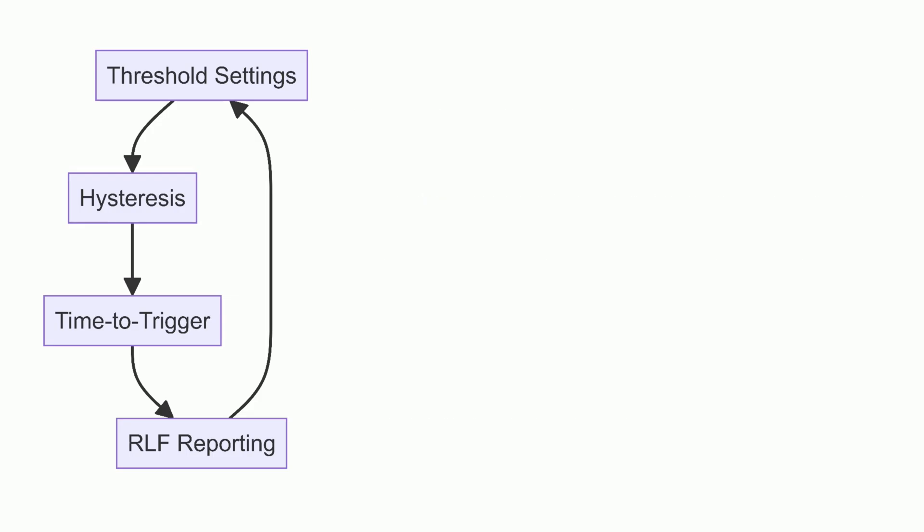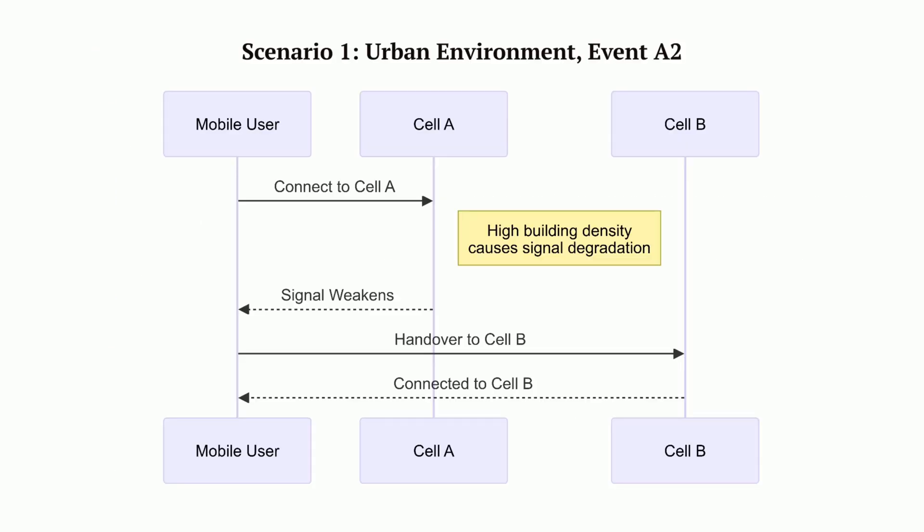Let's consider some practical scenarios. Scenario 1. In an urban environment, event A2 is frequently triggered due to high building density causing signal degradation, leading to increased handovers to maintain call quality.